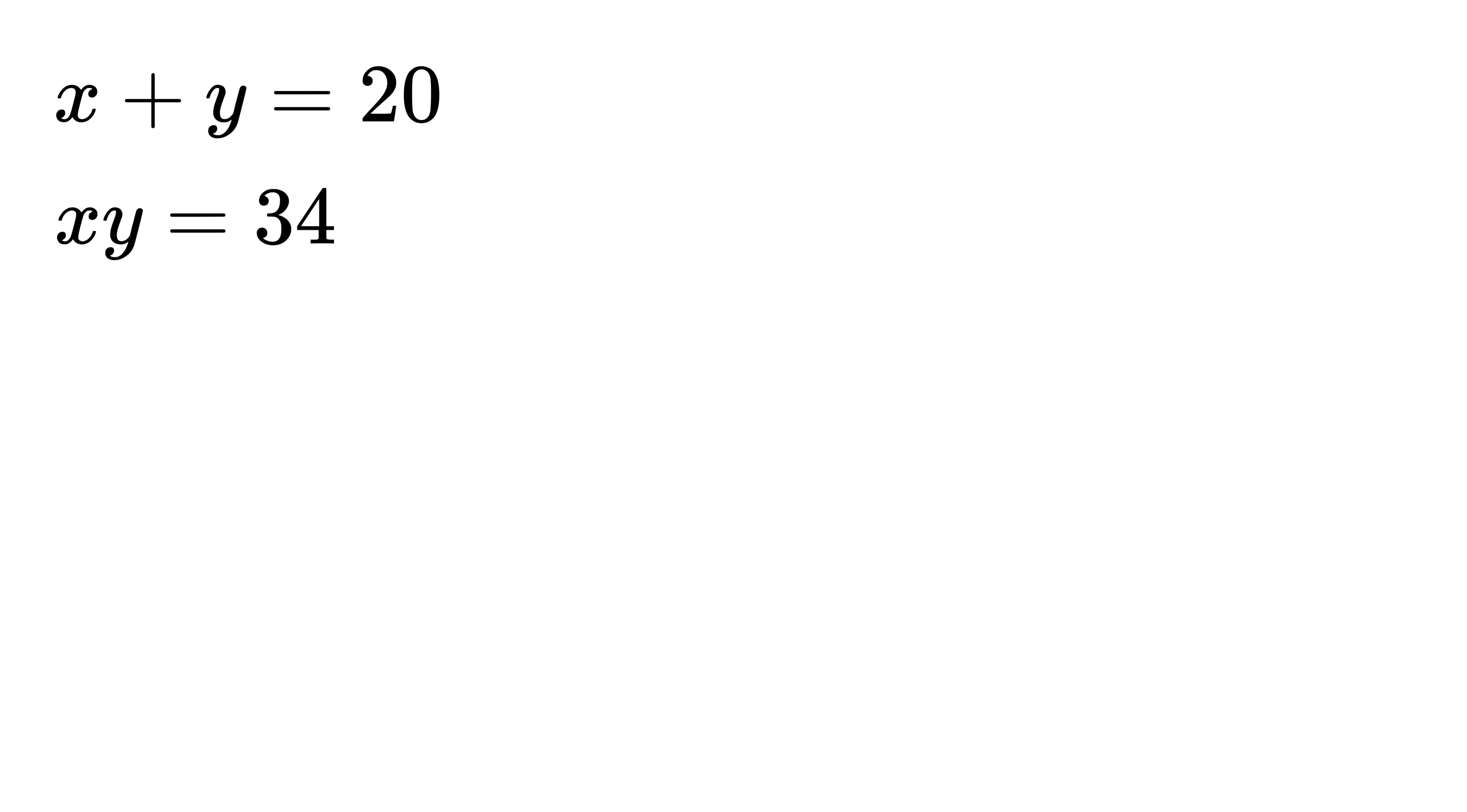Now, in order to use this fact for solving the problem, we take this value 20, which is x plus y, and divide it by 2 to get 10. Now put x as 10 plus r and y as 10 minus r. This symmetrical setup makes the algebra super clean and easy to work with.